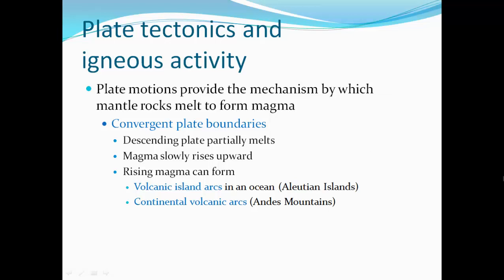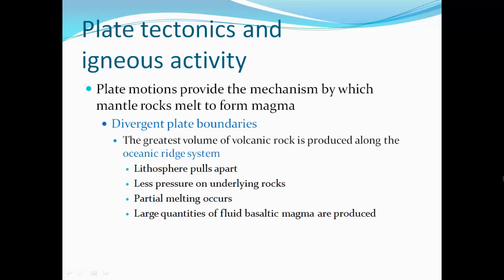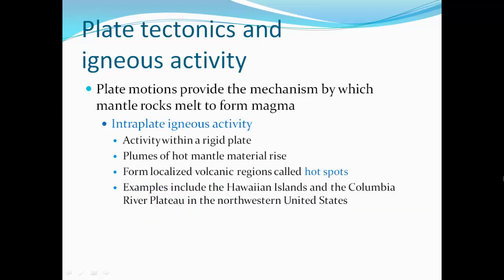Plate motions provide the mechanism by which mantle rocks melt to form magma. At convergent plate boundaries, a descending plate partially melts and magma slowly rises upward, forming volcanic island arcs in the ocean like the Aleutian Islands, or continental volcanic arcs like the Andes Mountains in South America or the Cascade Mountains in North America. At divergent plate boundaries, large volumes of volcanic rock are produced along oceanic ridge systems — as the lithosphere pulls apart, there's less pressure on the underlying rock, causing partial melting and producing large quantities of fluid basaltic magma. Within a plate, plumes of hot mantle material may rise from below, forming localized volcanic regions called hot spots — examples include the Hawaiian Islands and the Columbia River Plateau.